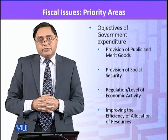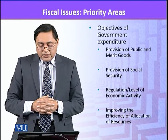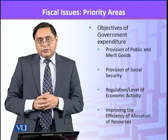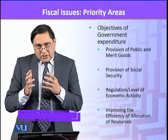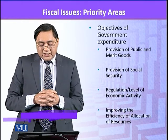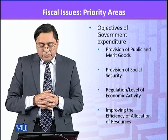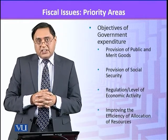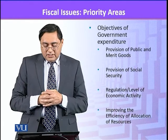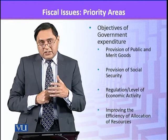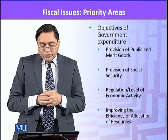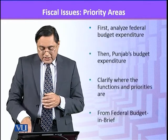So what are the objectives of government expenditures? The primary objective is to provide public and merit goods — those goods that have externalities and those goods that are more efficiently produced and distributed by a single entity. Another objective of government is provision of social security. Then there is regulation of the level of economic activity. We have different regulatory bodies such as NEPRA, PEMRA, and PTA, who regulate the behavior of markets or different industries like telecom or electricity generation. And then there is improving the efficiency of allocation of resources. So these are the objectives of government.